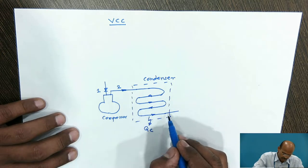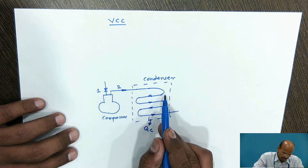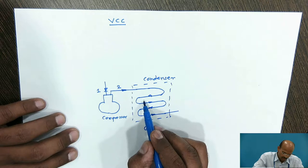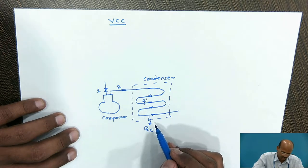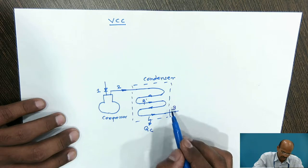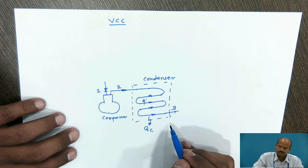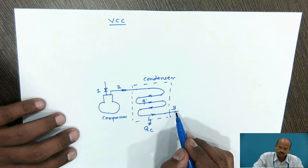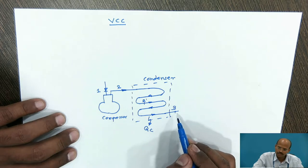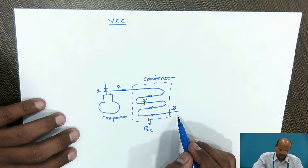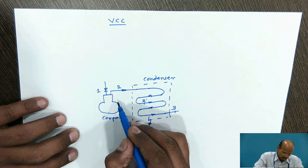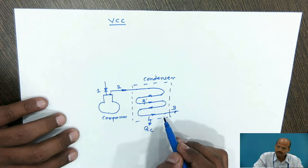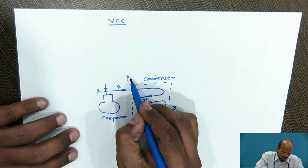After passing through the condenser tubes, the superheated vapor refrigerant undergoes the desuperheating process. Up to point 2-dash there is desuperheating, and from 2-dash to 3 is the condensation process. For theoretical VCC, at state 3 we get saturated liquid refrigerant. This process from the outlet of the compressor to the outlet of the condenser is isobaric and occurs at high pressure, or condenser pressure.